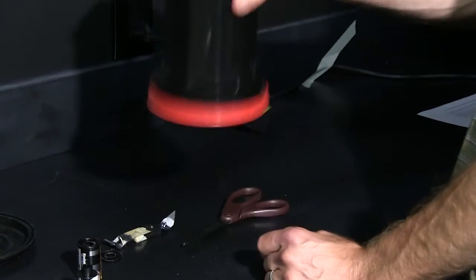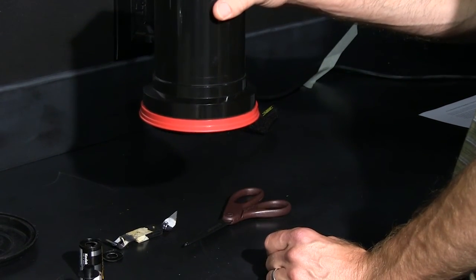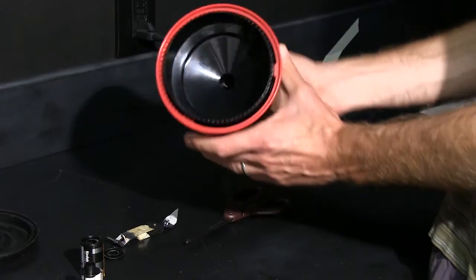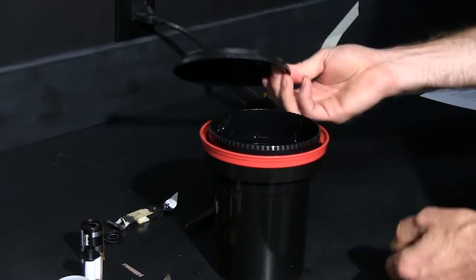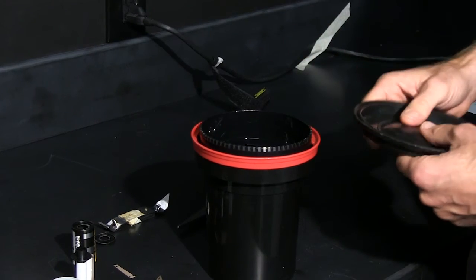You want to make sure it's locked under there. You can actually turn it upside down and give it a little shake to make sure that it's locked in place so it doesn't fall out while we're processing the film. Then at that point we can turn the lights on and we're ready to go out and process the film with the chemicals.